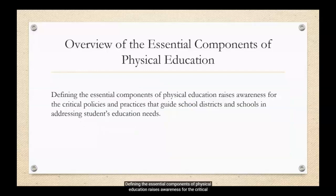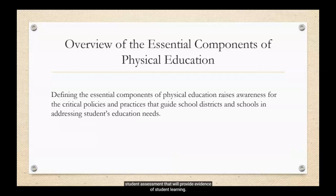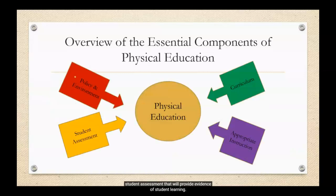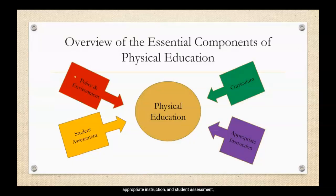Defining the essential components of physical education raises awareness for the critical policies and practices that guide school districts and schools in addressing students' educational needs. School districts and schools also must establish the written curriculum that defines what is to be taught, guides rigorous instruction that supports the curriculum, and identifies student assessment that will provide evidence of student learning. The essential components encompass four fundamental areas: policy and environment, curriculum, appropriate instruction, and student assessment. Effective practices within each of these areas support the delivery of quality physical education.